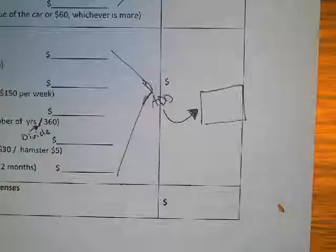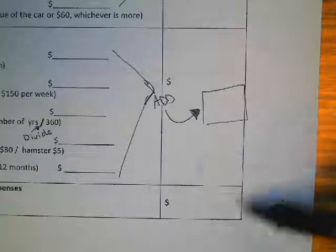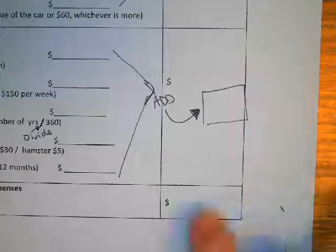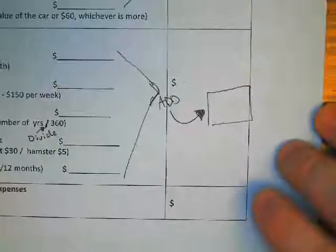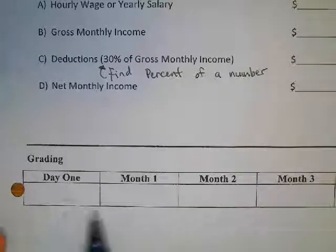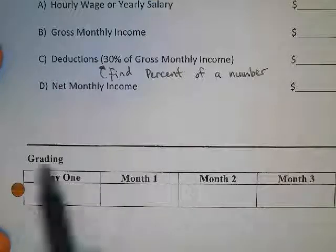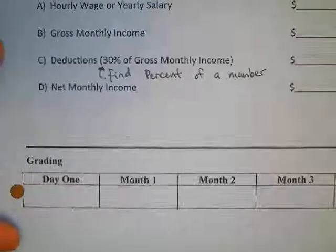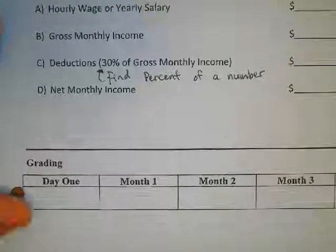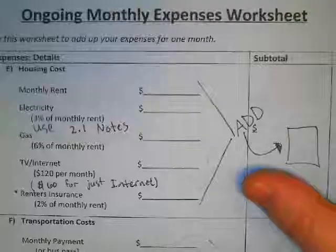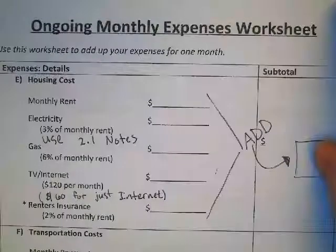Once you get that total, you can ask me and I'll check your work to make sure everything looks accurate. Then you'll be done with the first day of our project — that's what we're trying to get to today. I'll collect these on Friday, get them graded, and return them to you next week. Hopefully this video was helpful and gave you some hints on how to fill out our monthly expenses worksheet, so you can see how much you'll spend every month on rent, gas, cell phones, and internet.